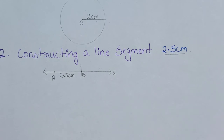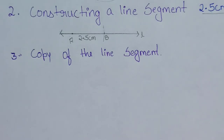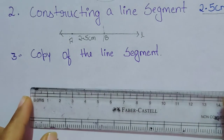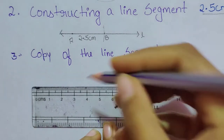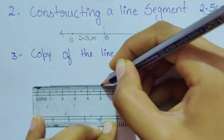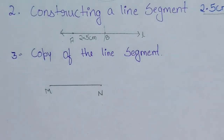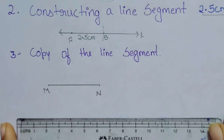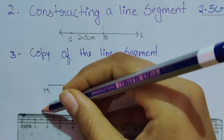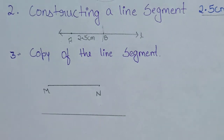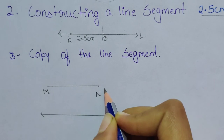The next topic is copy of a line segment. We will make a copy of the given line segment without measuring it. First, construct a line segment using ruler and pencil and name it MN. Then construct a new line on which the copy will be made.